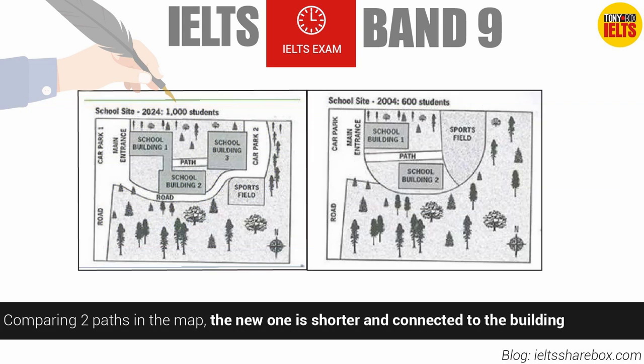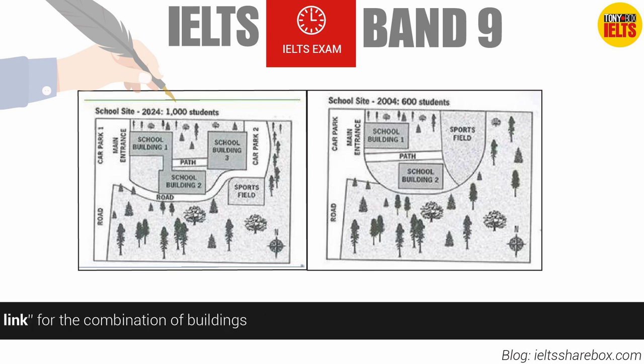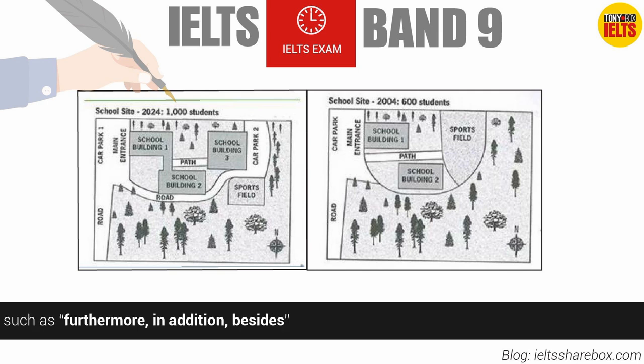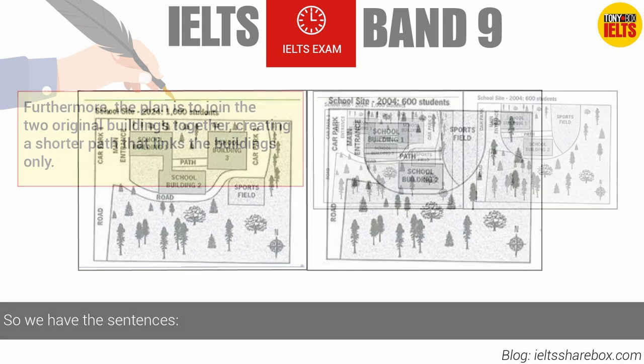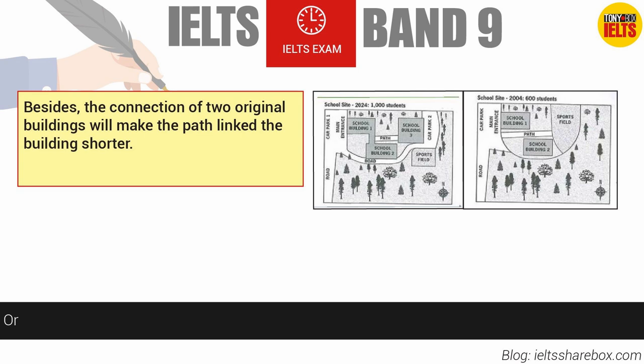Comparing the two paths on the map, the new one is shorter and connected to the buildings, so we can use a relative clause to describe the changes. Words like 'join,' 'connect,' and 'link' can describe the combination of buildings. Don't forget to add signposting words such as 'furthermore,' 'in addition,' or 'besides' to make the map clearer. For example: 'Furthermore, the plan is to join the two original buildings together, creating a shorter path that links the buildings only.' Or: 'Besides, the connection of the two original buildings will make the path linking the buildings shorter.'